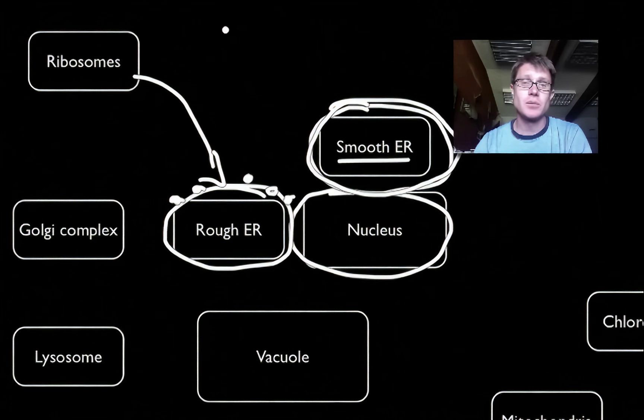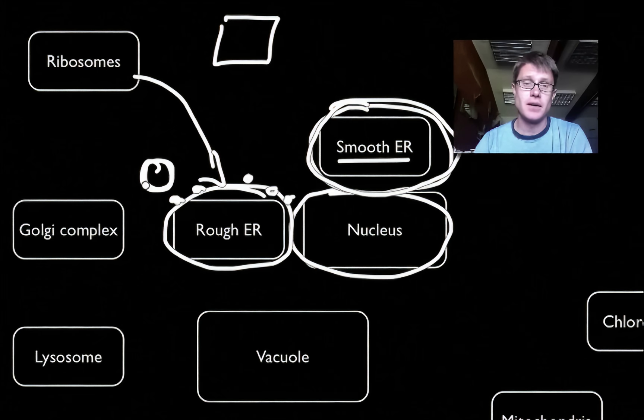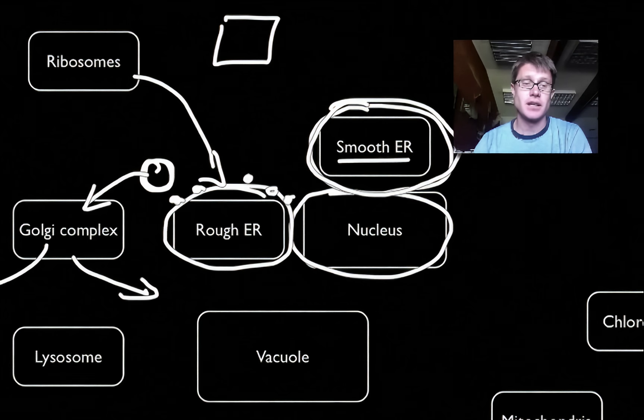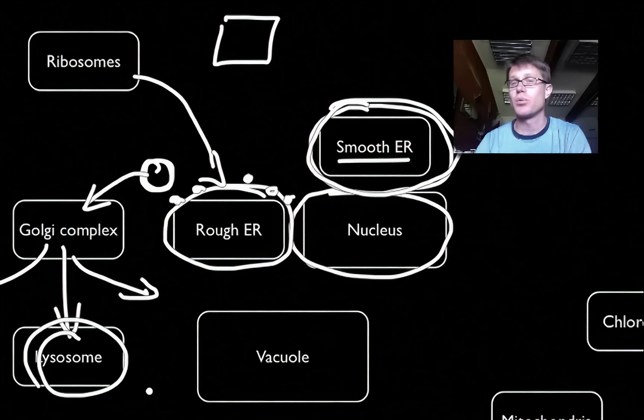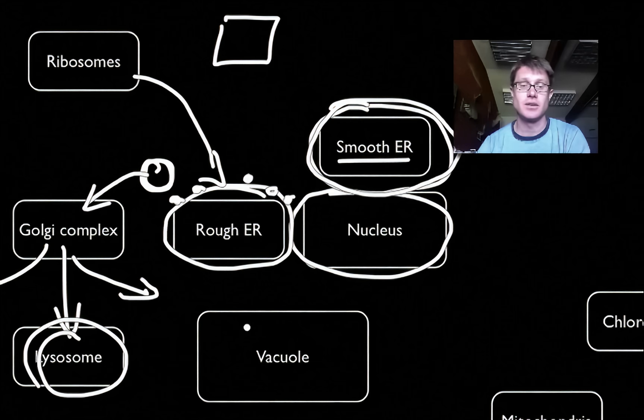Some of the ribosomes float around out here, but some of them are going to be found right on the rough ER. They're going to make proteins. Those proteins will be trapped in transport vesicles, brought to the Golgi complex. From there they can go to different parts of the cell or outside the cell. It's also where we produce lysosomes. Lysosomes are important in breaking down material when it's not used.